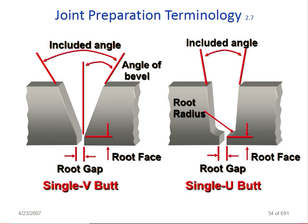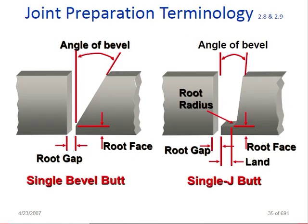Joint preparation terminology: the included angle is the full angle of the bevel. The angle of bevel is the single side angle. Root gap and single bevel butt are key terms. For a single-U butt joint, the preparation looks like a U shape — one important parameter is the root radius, which must be checked. The included angle is the full total angle. A single-J butt joint is like a U but on one side only.